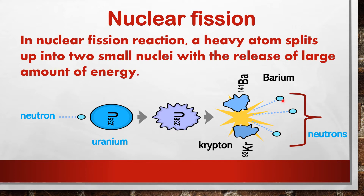We can use these three neutrons to bombard other uranium atoms to start another nuclear fission reaction. So uranium blast, hydrogen blast, atomic blast — these are the examples for nuclear fission reactions.